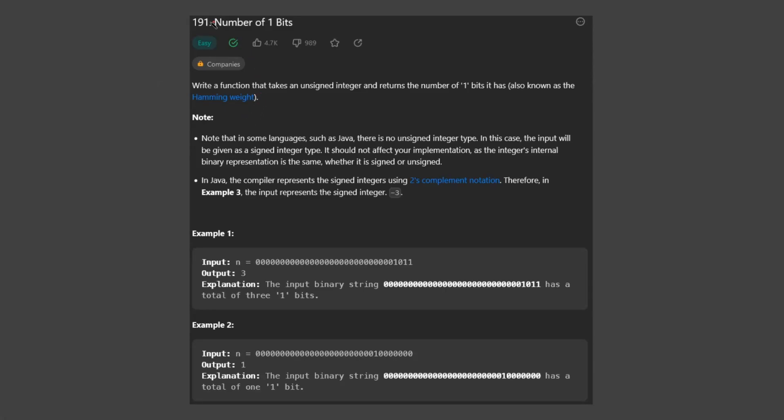Hey guys, it's OffByOne here, and today we're going to be solving number of 1 bits. In this problem, we're given an unsigned integer, and they want us to return the number of 1 bits that it has. So for example, for this number here, we know we have 1, 2, and 3 one bits.